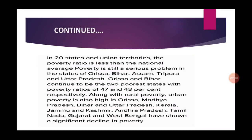Poverty is still a serious problem in states like Odisha, Bihar, Assam and Uttar Pradesh, with Odisha and Bihar being the two poorest states at 47% and 43% respectively. In comparison, there has been a significant decline in poverty in Kerala, Jammu and Kashmir, Andhra Pradesh, Tamil Nadu, Gujarat and West Bengal. Let us see the reasons why poverty is declining fast in these states.